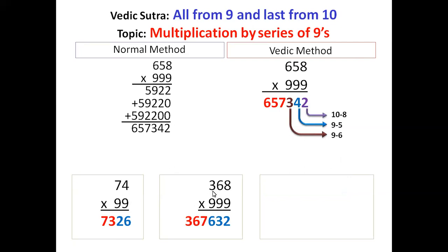And second step, all from 9, last from 10. 9 minus 3 is 6. 9 minus 6 is 3. And last from 10, 10 minus 8 is 2.